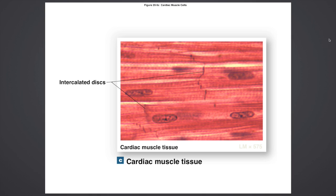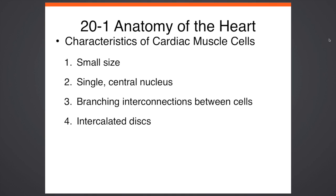This is cardiac muscle tissue. Intercalated discs are the little lines connecting the actual cells of the heart. The four characteristics of cardiac muscle cells are: they are quite small in size; they are single with a central nucleus; they have branching interconnections between cells; and they have intercalated discs. These four characteristics will be on your test.